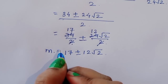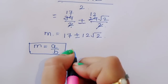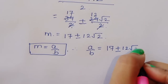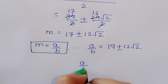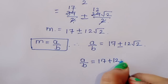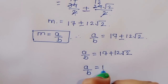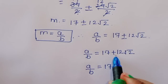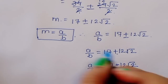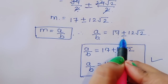We already considered that m is equal to a upon b. Simplifying, 34 divided by 2 is 17 and 24 divided by 2 is 12, so we get 17 plus or minus 12 root 2. Therefore, a upon b is equal to 17 plus 12 root 2, or a upon b is equal to 17 minus 12 root 2. This is the final solution.